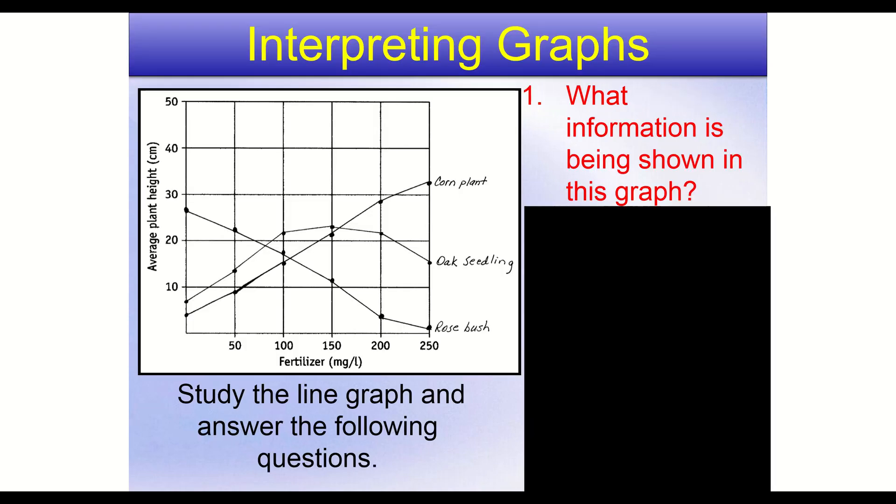All right, so our first question. So we have to study this graph here. That's what our overall directions are asking us to do. And we'll have a number of questions. And our questions here are going to be written in red. So what information is being shown in this graph? So we're not going to say any conclusions, none of that. We're just simply saying, what does this graph really tell us? Typically, when we're doing this, the best places to look are going to be our different axes. Our X and our Y. And so if we look at that, we see we have average plant height and we have fertilizer.